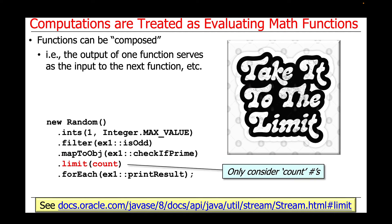The next stage in the stream is the limit intermediate operation, and we use this to only consider count numbers. So we're going to consider the first count odd numbers. So limit is an example of what's called a short circuiting operation. Once the limit has been reached, then the stream will stop dealing with the values that come after that.